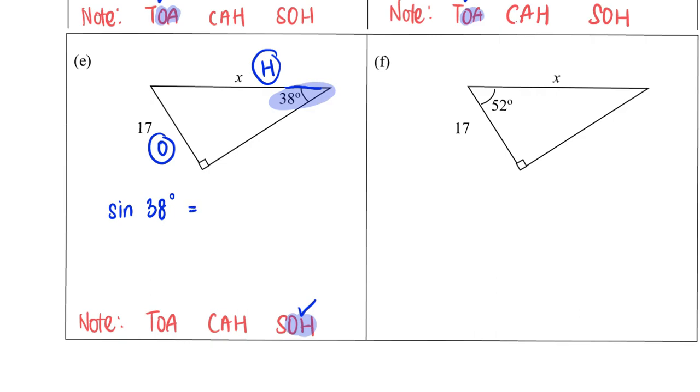In this case it will be O, which is 17, divided by H, which is x. I would multiply by x on both sides and divide by sine 38 degrees on both sides. That will give me a value of 27.6126 to six significant figures. Final answer is 27.6 to 3 significant figures.